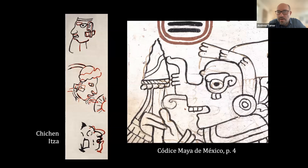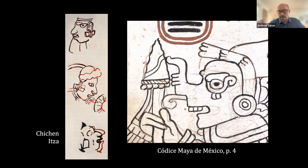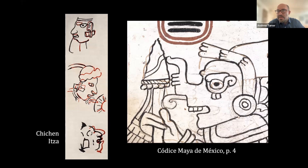One of the new pieces of evidence addressed a critique about red underpainting visible on the pages — what we might call in the Renaissance tradition 'pentimenti' — where initial sketches were done in red and another artist later inked everything in black pigment. This had been considered evidence against its authenticity. However, the Coe colleagues noted that in Maya mural painting it's actually quite common to see this red underpainting with the black final version, such as at Chichen Itza and in the famous murals of Bonampak from the Classic period.